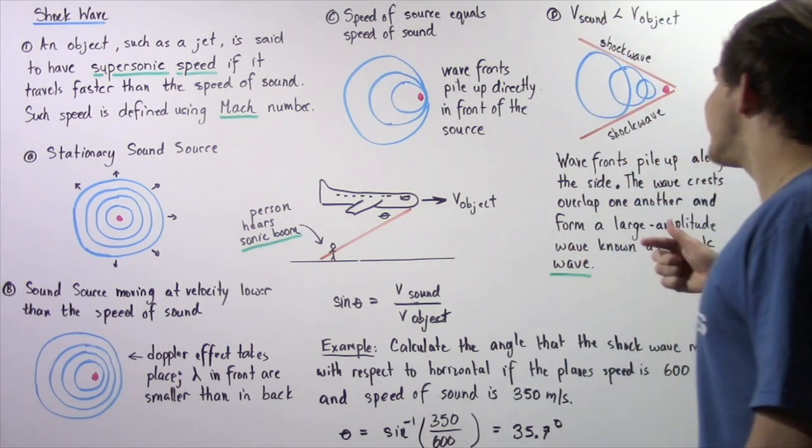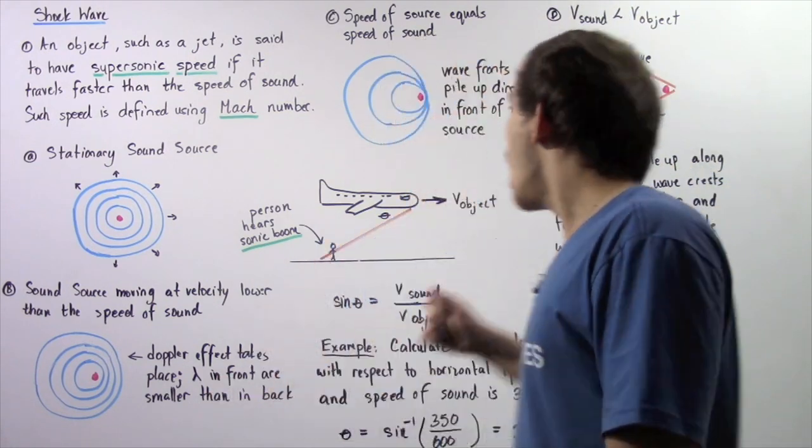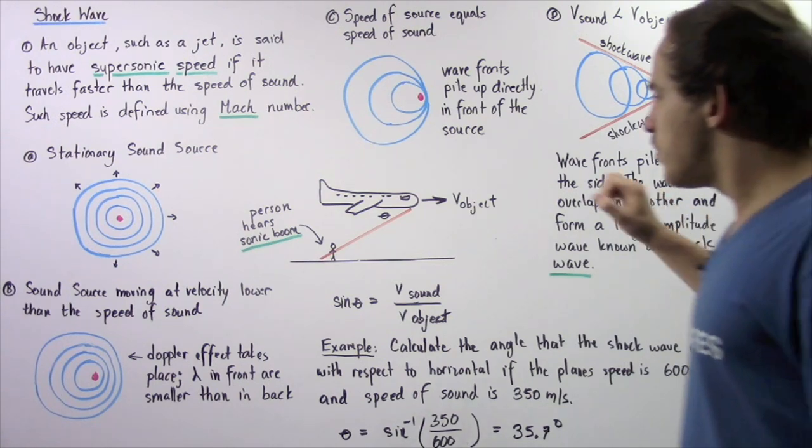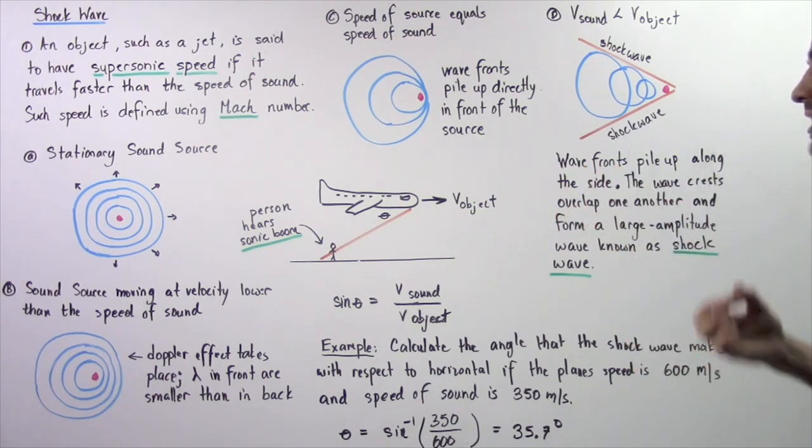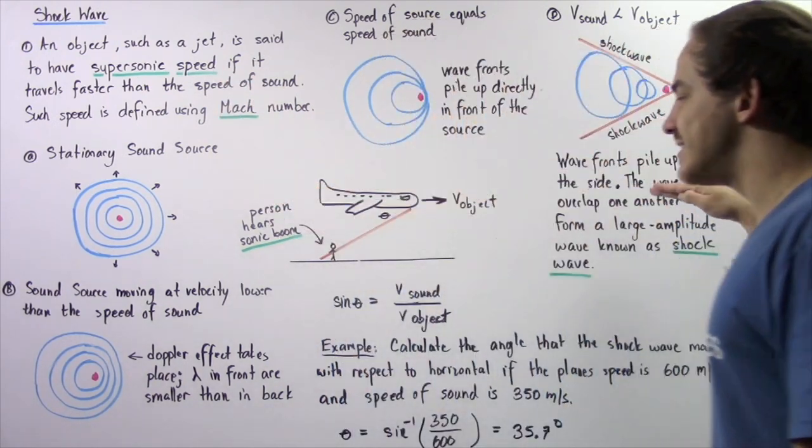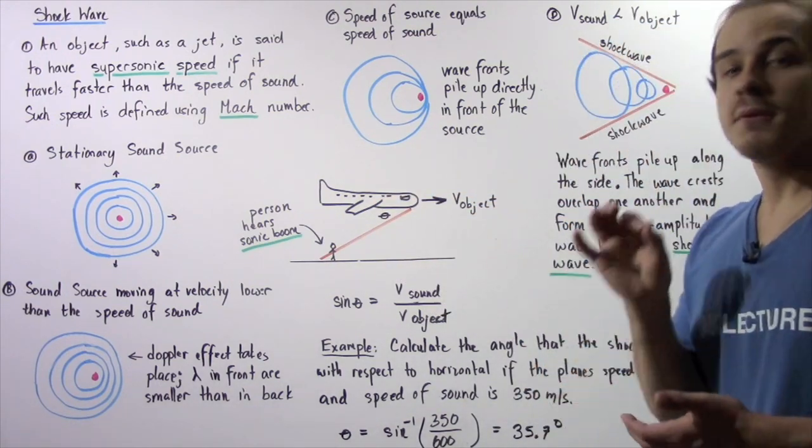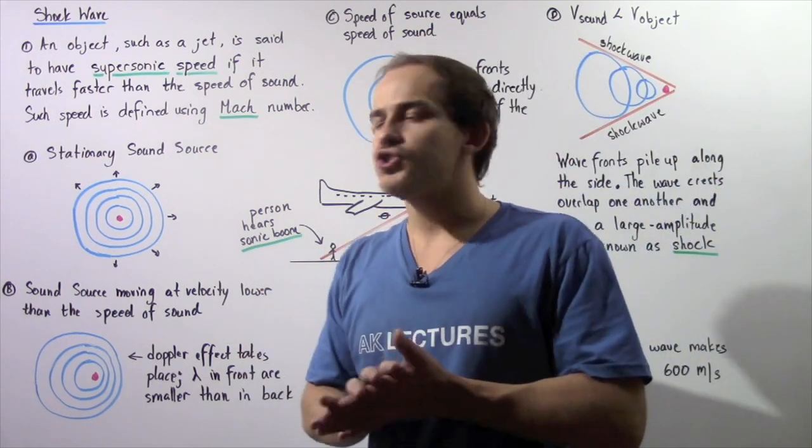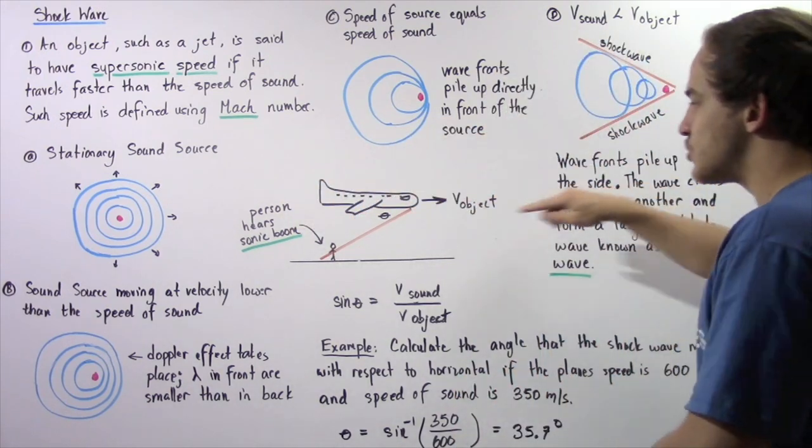So the shock wave is a direct result of constructive interference of all these different circular waves. Now, let's suppose we have a person standing on the ground and an airplane that is traveling at supersonic speed passes the person who is standing on the ground.